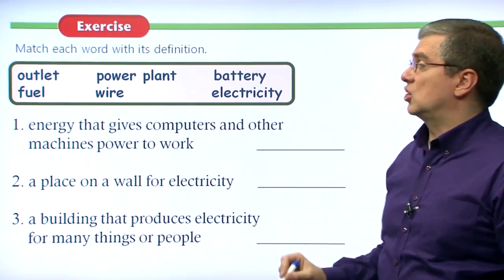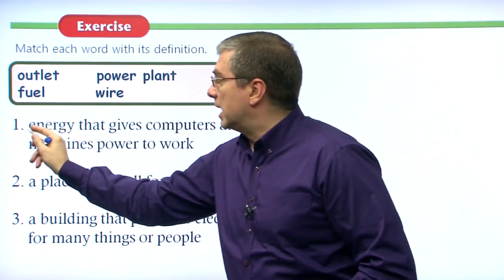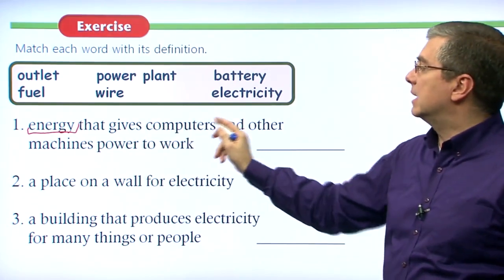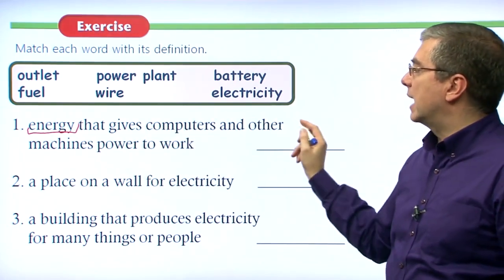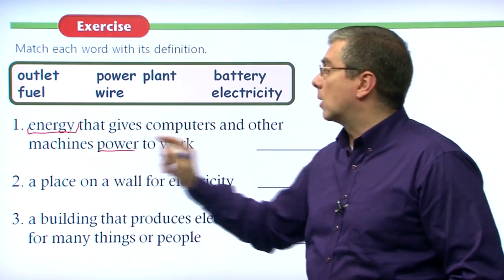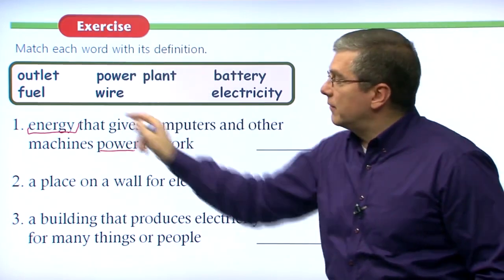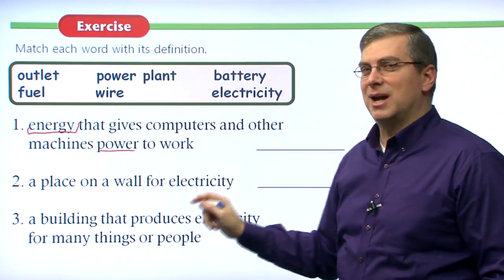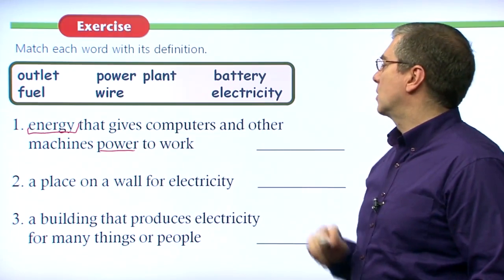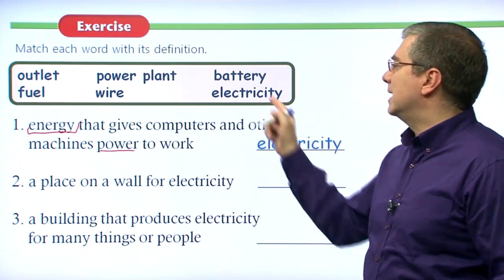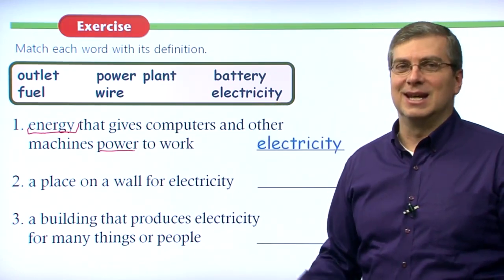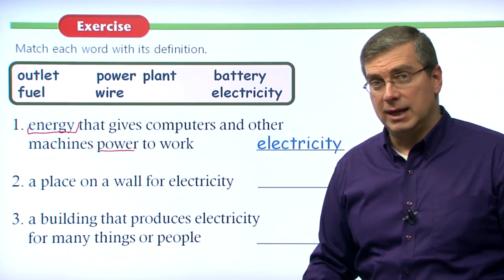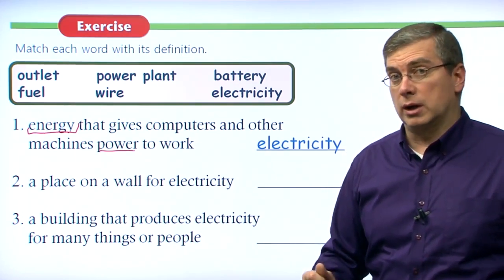The first definition: energy that gives computers and other machines power to work. Which one is a powerful energy? Of course, our word is electricity — electricity is a powerful energy that makes machines work.